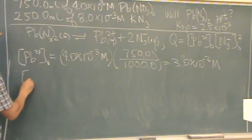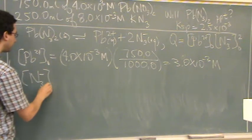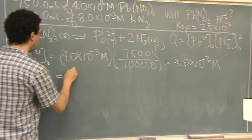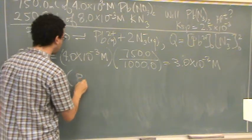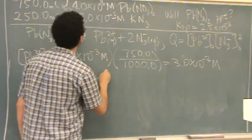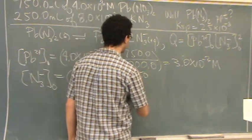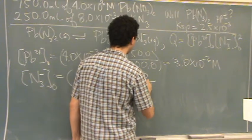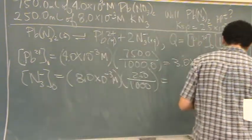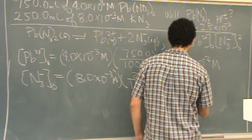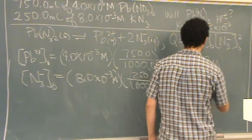Do the same for the N3 minus. That's initial concentration 8.0 times 10 to the minus 3 molar. Do the volume adjustment. You start off at 250, you go to 1000. And I got 2.0 times 10 to the minus 3 molar.